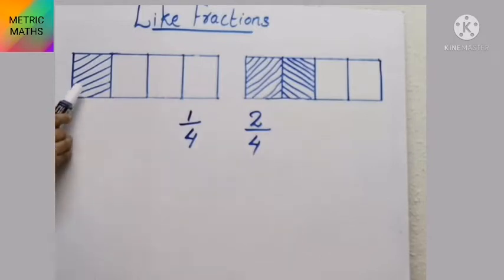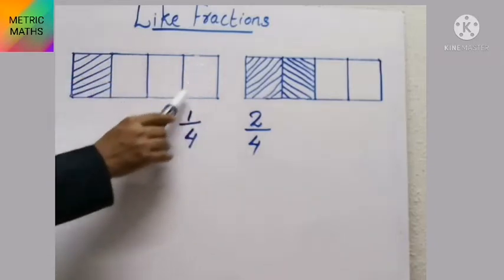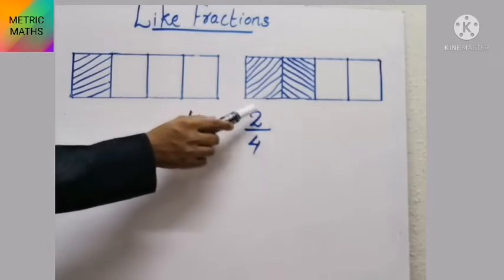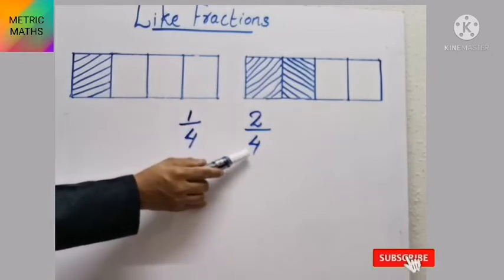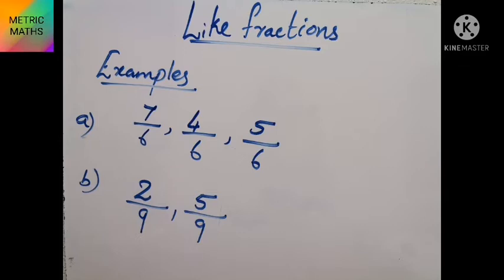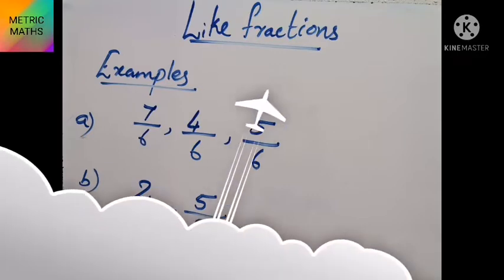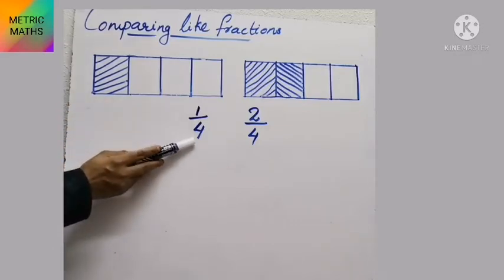Look at this picture. The first picture shows 1 by 4 — out of 4 parts, 1 part is shaded. Look at the second picture: out of 4 parts, 2 parts are shaded, which means it is 2 by 4. In the first example, the fractions are 7 by 6, 4 by 6, and 5 by 6 — the denominators are the same, so these are like fractions. In example 2 also, the denominators are the same, so those are also like fractions.